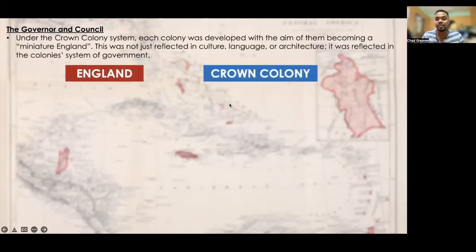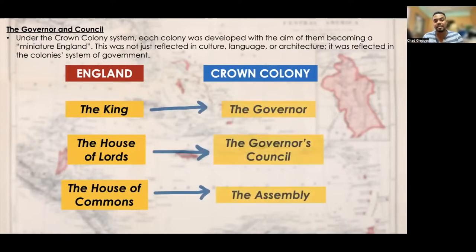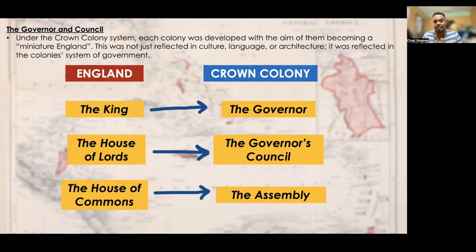In England, the three echelons of government are the king, the House of Lords, and the House of Commons. In the crown colony, there was a mirror effect: the governor would represent the king, the governor's council would reflect the House of Lords, and the assembly would represent the House of Commons. In our modern context in the English-speaking Caribbean, the governor would be like a prime minister, the governor's council like a cabinet, and the assembly like members of parliament.